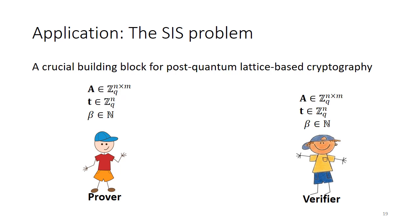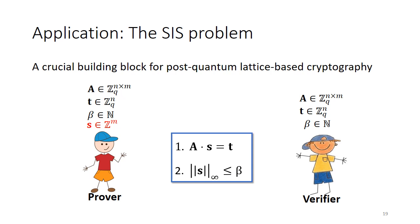In the SIS problem, the prover has a matrix A and a solution T (which the verifier also has), and it wants to convince the verifier that it knows a vector S such that A times S equals T, and furthermore that S is small, meaning that the norm of S is at most beta. Showing that A times S equals T is easy; the hardness comes from the fact that S has to be small. This is a crucial building block for all kinds of post-quantum lattice-based cryptographic protocols, so it is very important to have efficient protocols for proving such a statement.